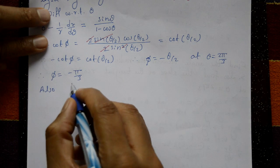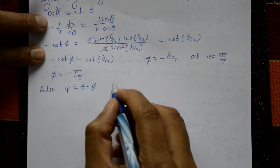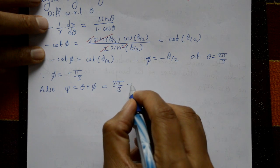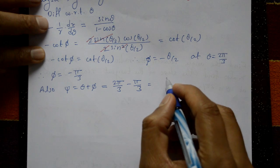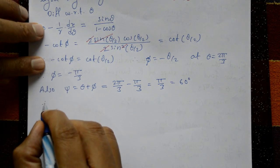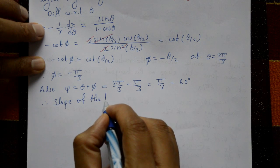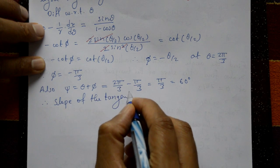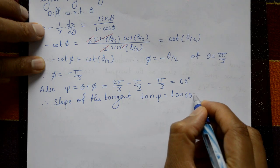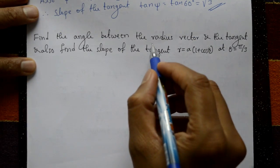Also find the slope of the tangent. ψ = θ + φ = 2π/3 + (−π/3) = π/3, which is 60°. Therefore slope of the tangent = tan ψ = tan 60° = √3. This is the required solution.